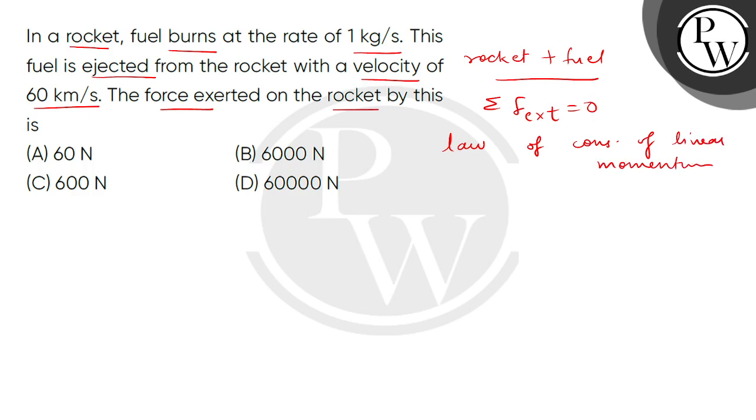So we're given here that fuel burning rate is 1 kg per second, which we can take as del M divided by del T. This is equal to 1 kg per second.